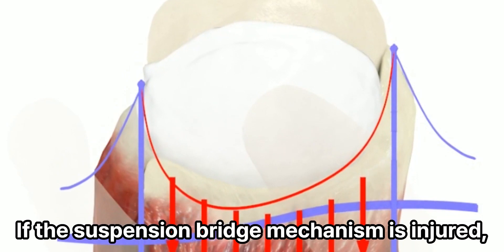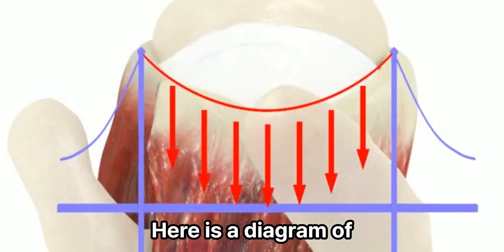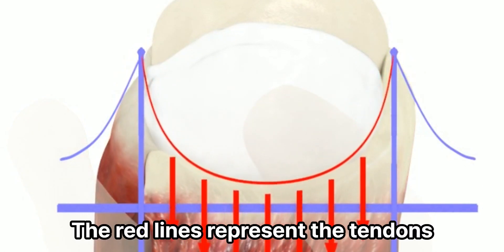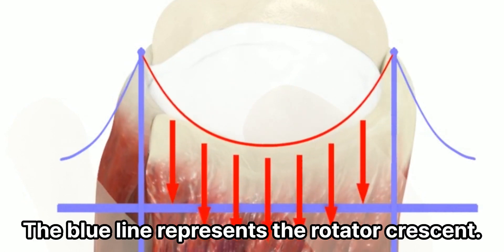If the suspension bridge mechanism is injured, it can lead to a rotator cuff tear. Here is a diagram of the suspension bridge mechanism of the rotator cuff. The red lines represent the tendons of the rotator cuff. The blue line represents the rotator crescent.